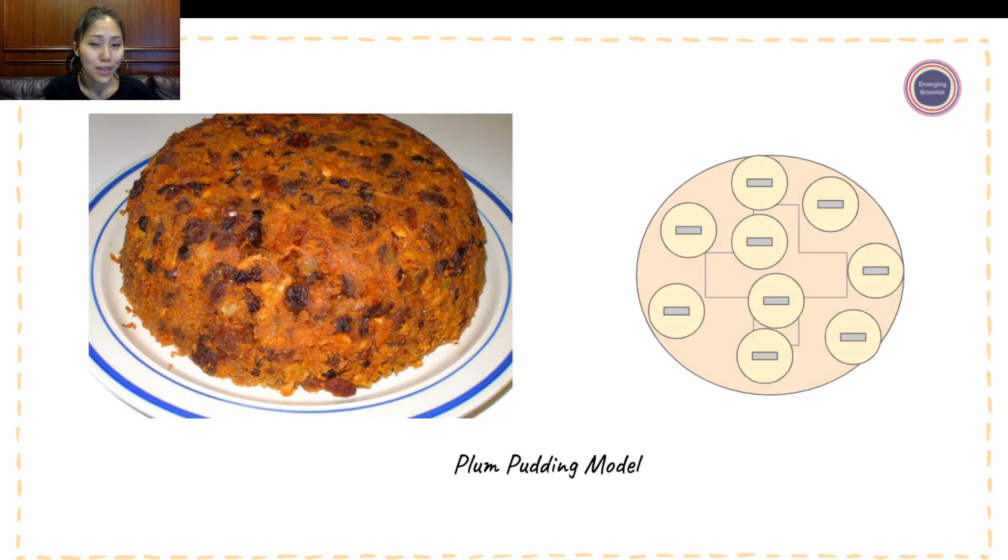What this shows you is where he came up with the concept of a plum pudding model. So as a British scientist in Britain, they love to eat plum pudding. And so he figured that plum pudding was a great way to describe his revolutionary idea of how the electrons were situated in an atom.